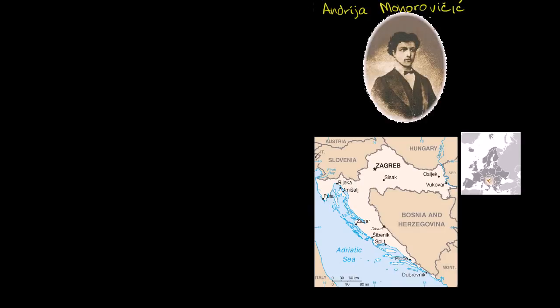The first realization that there were actually distinct layers of the Earth came from Andrija Mohorovicic — and I apologize ahead of time to any Croatians for butchering the pronunciation. He was a meteorologist and a seismologist, and he was the first one to notice in 1909 when there was an earthquake in Croatia, a little bit southeast of Zagreb.